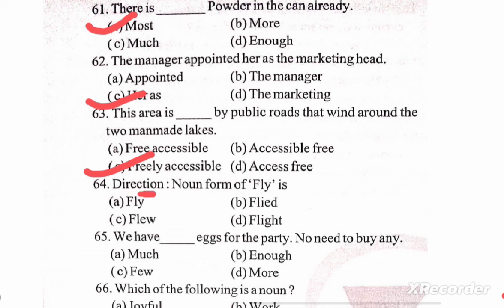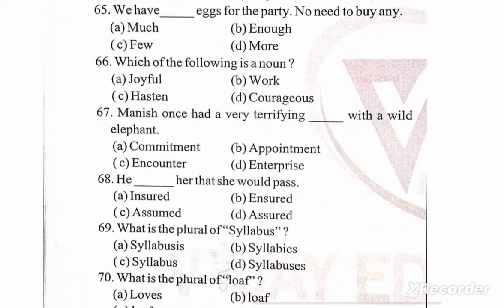Next question: the noun form of fly is — the correct option is D, flight. Question number 65: we have blank space for the party, no need to buy any. Options: much, enough, few, more. The correct option is B — enough.